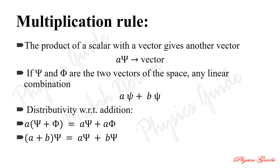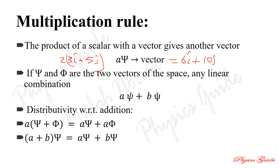If we multiply a scalar with a vector we get a vector. For example, vector A equals 3i plus 5j. If we multiply by scalar 2: 2 times 3 equals 6, giving 6i; 2 times 5 equals 10, giving 10j. So 2 times A equals 6i plus 10j — a vector quantity.